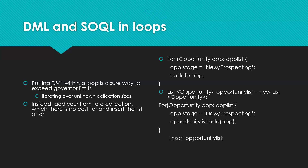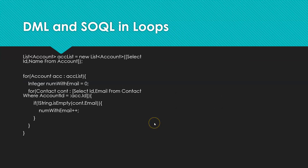Here's a better way to do it. First, I'm going to have an empty list of opportunities. I'll iterate through that same op list, still set the stage, but instead of doing the update right then and there within the for loop, I'll add that single opportunity into another list. At the end, when I exit my for loop, I insert all the opportunities from that list. This is a great way to avoid those governor limits.